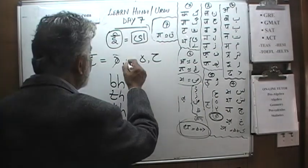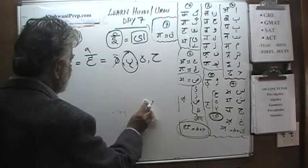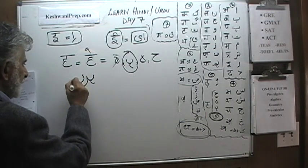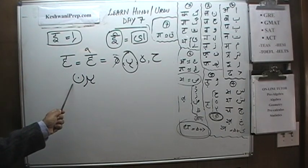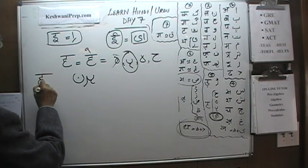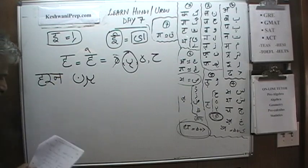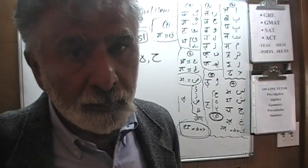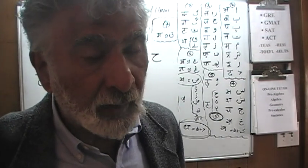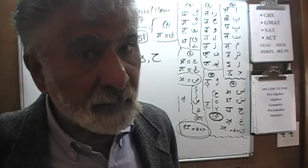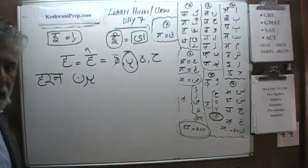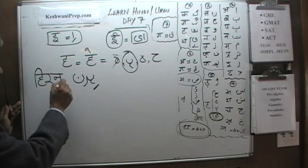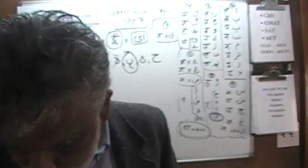We are going to use a word with Do Chashmi Hai. The word uses He, Re, and Noon — H, R, and N. Without a matra it reads 'Haran,' which is not a word. It is missing a Choti Iki Matra. We need a Zer underneath the He. When we put a Zer there, it takes Choti Iki Matra and now we have the word Hiran — meaning deer.